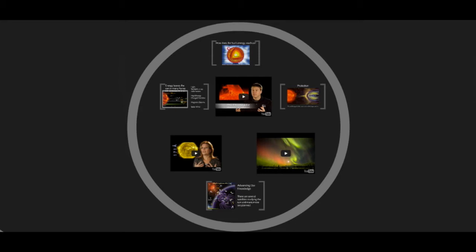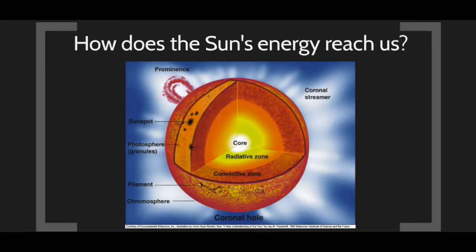Next, we want to look at where this energy goes — how does the energy get out of the Sun? In the core, nuclear fusion takes place under tremendous pressures and temperatures, and the energy coming out of the core is mainly in the form of radiation — gamma rays and light. That enters a very hot, dense plasma in the radiative zone, where light bounces off charged particles.